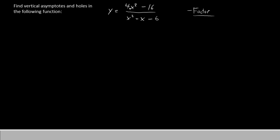Let's start with the top. We have 4x squared minus 16, and you may notice that they both have 4 in common. Let's definitely factor out that 4. If we factor out the 4, we'll have 4 times x squared minus 4.